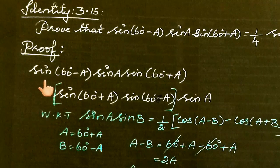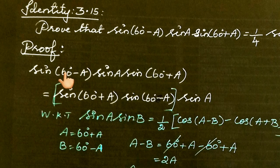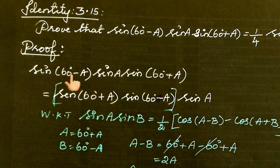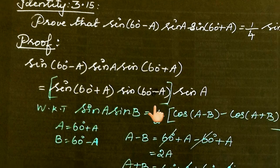Write the left-hand side as sin(60-A) × sin(A) × sin(60+A). These are three products. Let's rearrange: sin(60+A) × sin(60-A) × sin(A). We'll use the first two products to simplify.